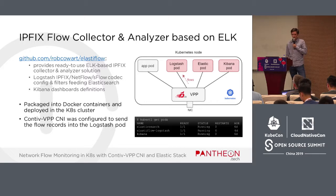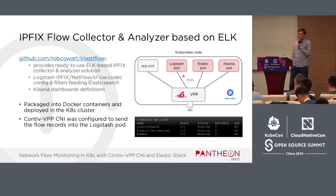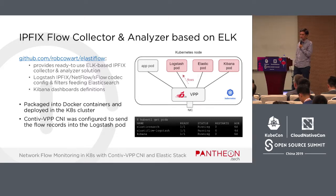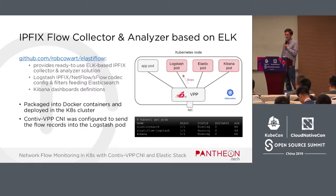Once we have VPP acting as a vswitch between the pods thanks to ContiaVPP CNI, and we've enabled IPFIX on each pod interface, we need to deploy Logstash, Elasticsearch, and Kibana. For this we can use an existing project called Elastic Flow, which is a ready-to-use IPFIX collector and analyzer solution. I packaged that into Docker containers, wrote deployment YAML files for Kubernetes, and all three components run as pods in my Kubernetes cluster. The VPP instance is then configured with the IP address of the Logstash pod, where it sends all the flow information.